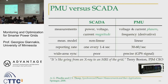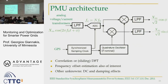Terry Boston, the CEO of PJM — Pennsylvania, Jersey, Massachusetts — one of the largest operators, said it's like going from an X-ray to an MRI of the grid. For communications people to feel at home: you have an analog voltage or current transformer providing a sinusoidal waveform, which you low-pass filter, pass through an ADC, and obtain a GPS-synchronized sampling clock.